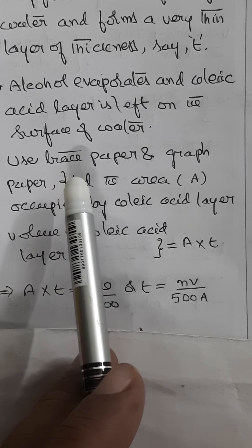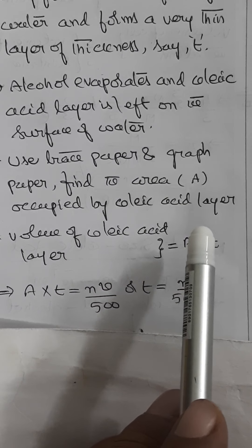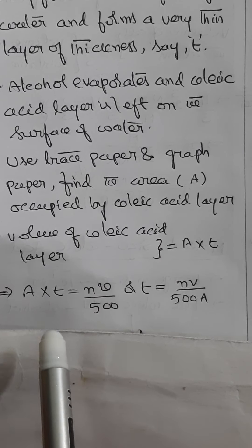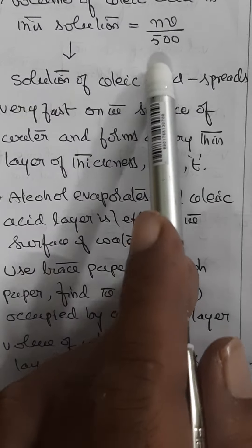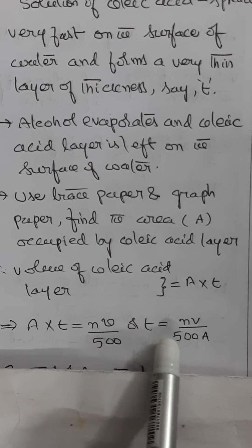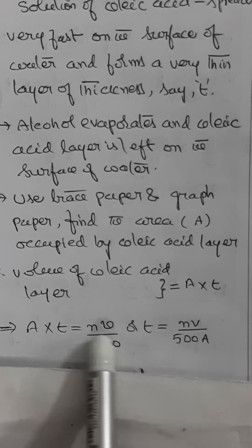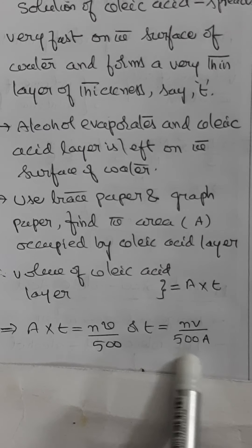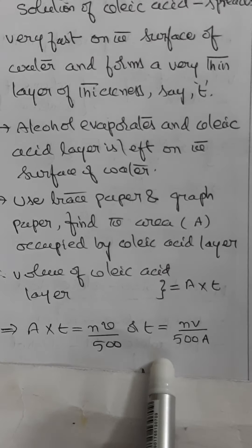Using a trace paper and a graph paper, find the area A occupied by the oleic acid layer. Volume of oleic acid in the layer is A into T. From these two equations, NV by 500 and A into T, we get A into T equal to NV by 500, and therefore T equals NV by 500A. If the thin layer is assumed to be one molecule thick, the value of T gives us the diameter of a molecule of oleic acid, which comes out to be of the order of 10 to the power minus 9 meters.